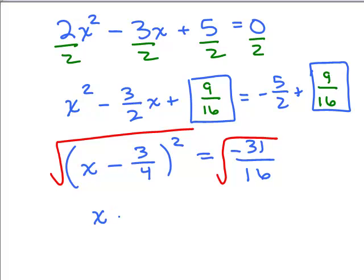So we have x minus 3 fourths equals, all right, again we're taking the square root of a negative number, so it's going to be a complex number. It's going to be plus or minus, don't forget the plus or minus, square root of 31i.